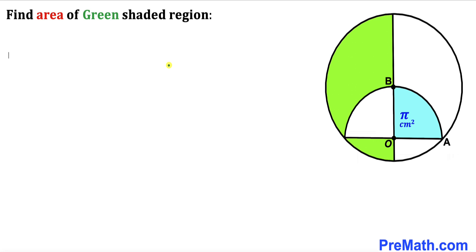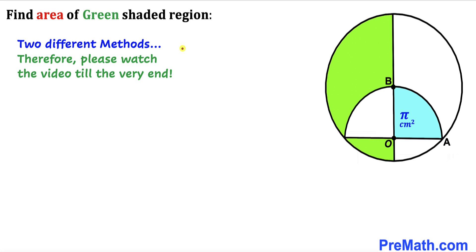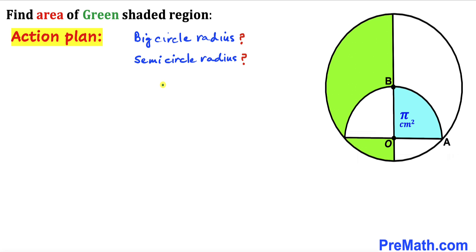Let's get started. In this video I'm going to share two different approaches, so please watch till the very end. Here's our action plan: before we do anything else, we must calculate the radius of the big circle and the radius of the smaller semicircle.